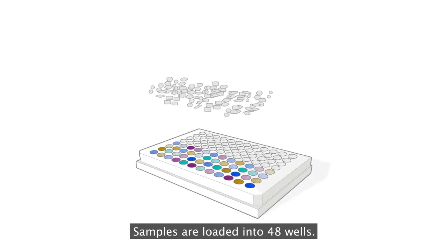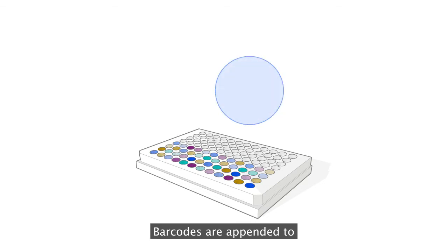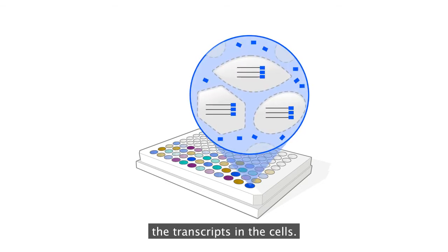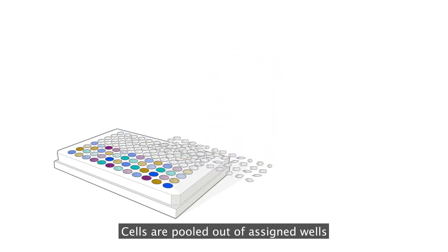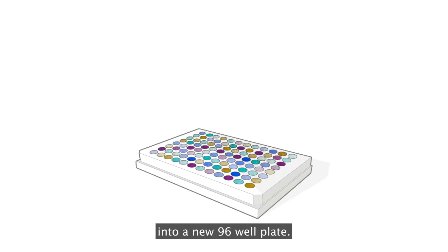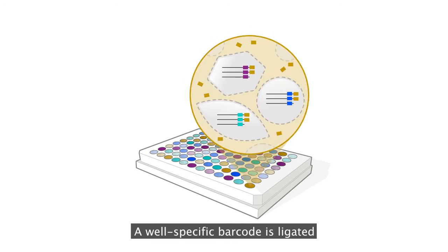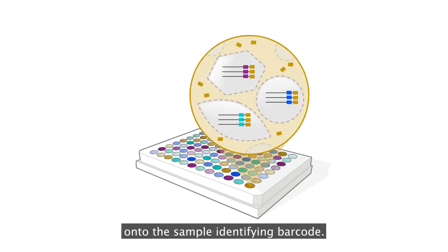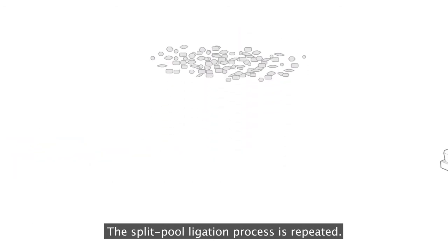Samples are loaded into 48 wells. Barcodes are appended to the transcripts in the cells. Cells are pooled out of assigned wells and redistributed randomly into a new 96-well plate. A well-specific barcode is ligated onto the sample identifying barcode.